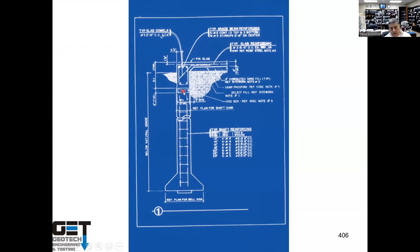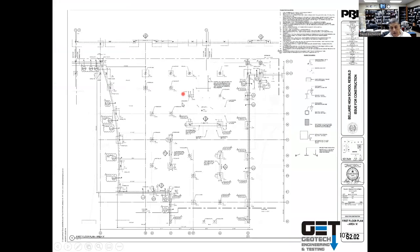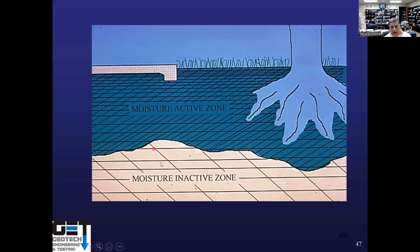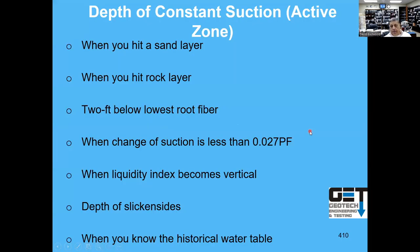You put void boxes in between the piers. This is Bel Air High School — you can see where the piers are on the foundation drawings. One important way to determine your pier depth: you've got to understand the moisture active zone. That's typically the zone affected by moisture changes — especially if you've got trees, your moisture active zone is going to be deeper. The way you determine the depth of the moisture active zone is when you hit a sand layer or a rock layer, or two feet below the lowest root fiber.